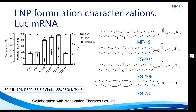The new sulfur lipids were used for LNP formulation. LNP-mRNA systems were composed of ionizable cationic lipid, DSPC, cholesterol, and PEG lipid at molar ratios of 50%, 10%, 38.4%, and 1.5%. Polydispersity index, size, and entrapment of the resulting nanoparticles are shown here. For MF19, the PDI was approximately half of that observed with benchmark MC3 and KC2. The pKa for MF19 is 6.39, which is acceptable compared to MC3 and KC2 at 6.4. FS107 and FS109 showed lower entrapment.